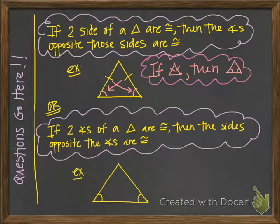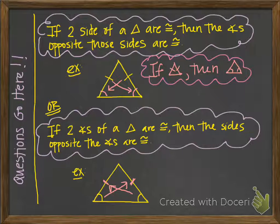The reverse of that theorem says if two angles of a triangle are congruent, then the sides opposite those angles are congruent. In this picture we see two angles that are congruent. If we draw arrows to the opposite sides, those two sides will also be congruent. In all isosceles triangles, if you see either two sides that are congruent or two angles that are congruent, you know that triangle is isosceles.